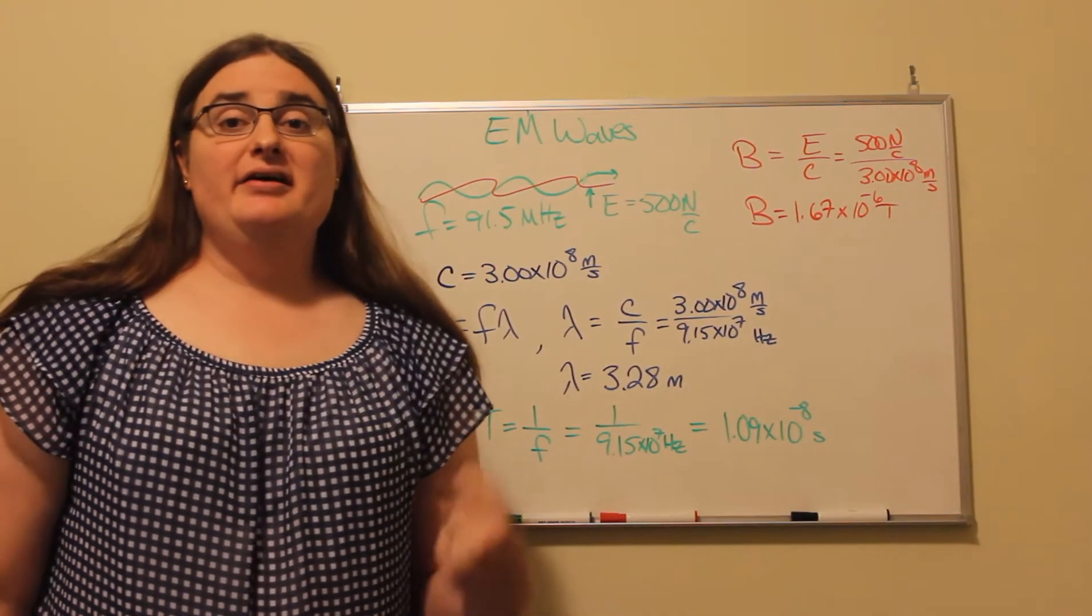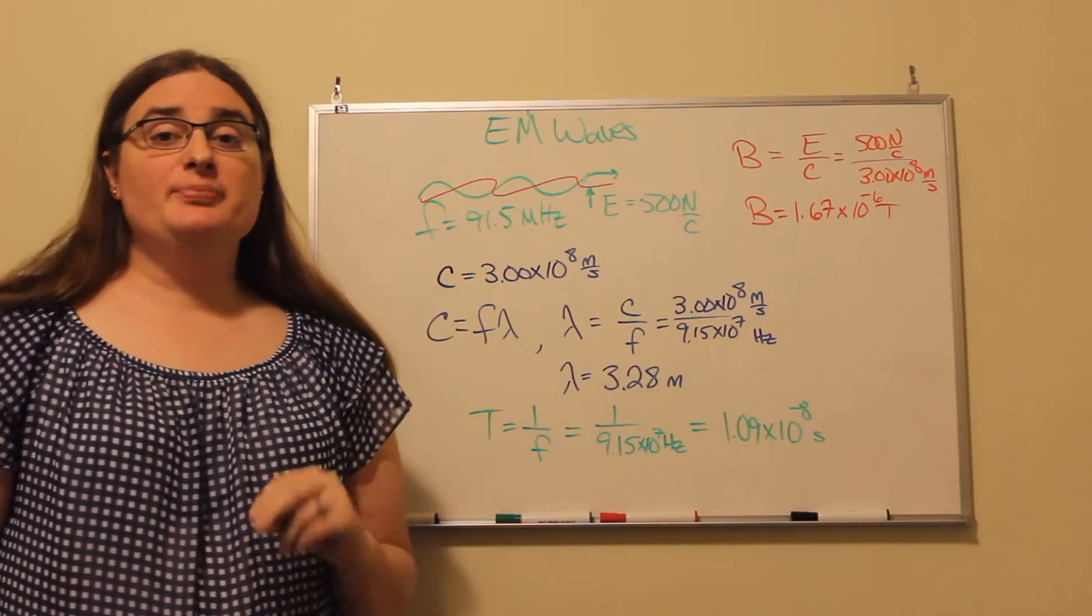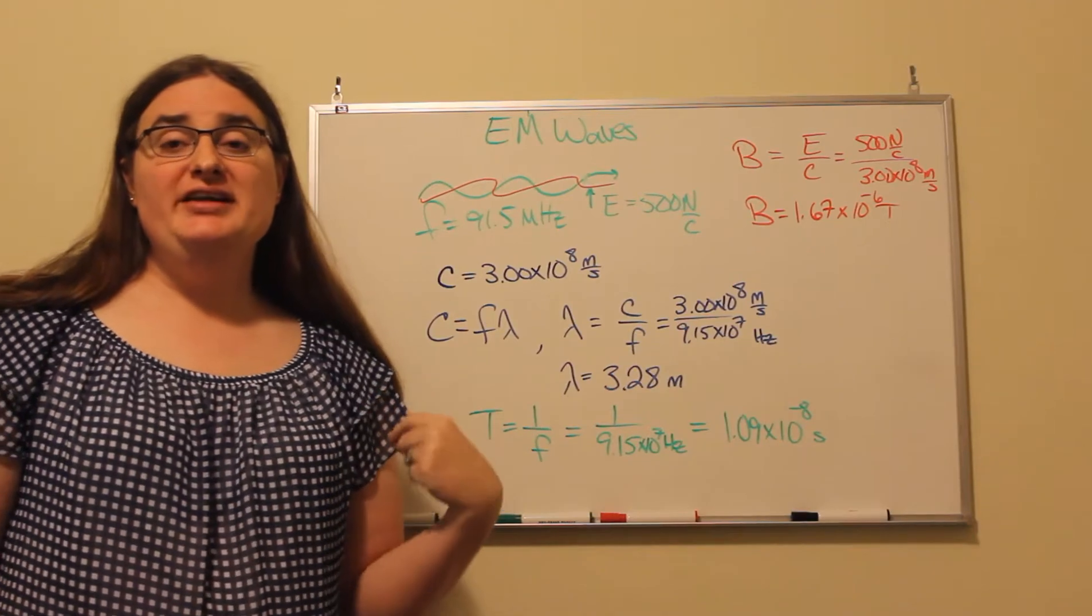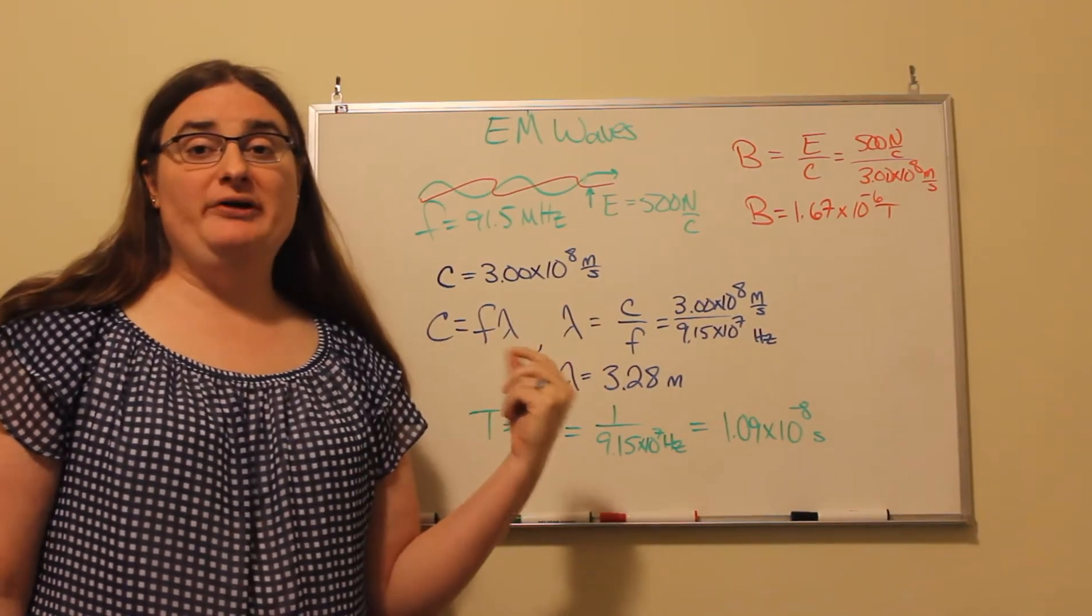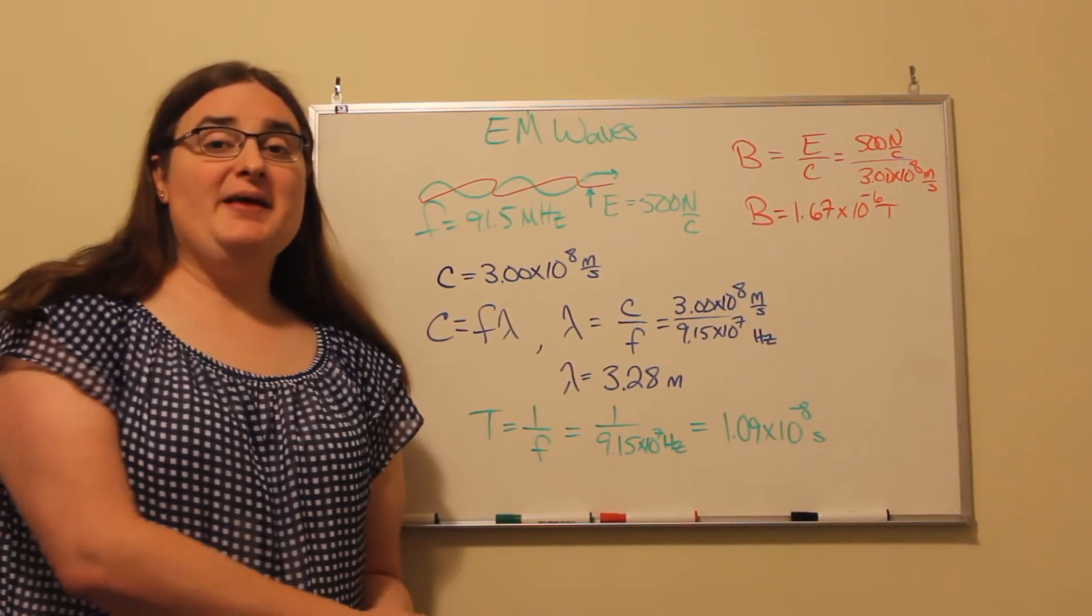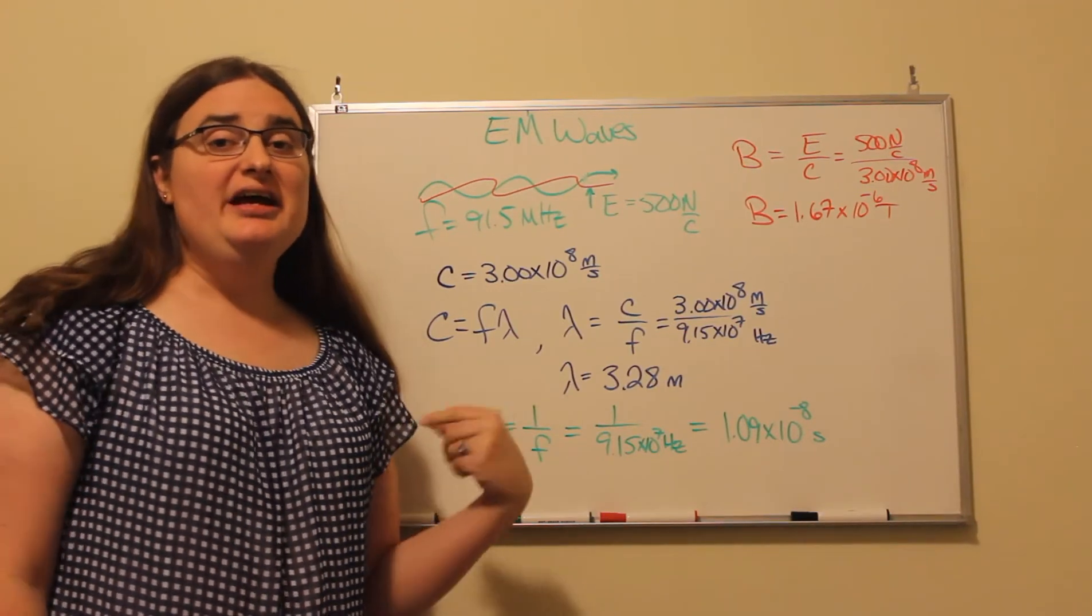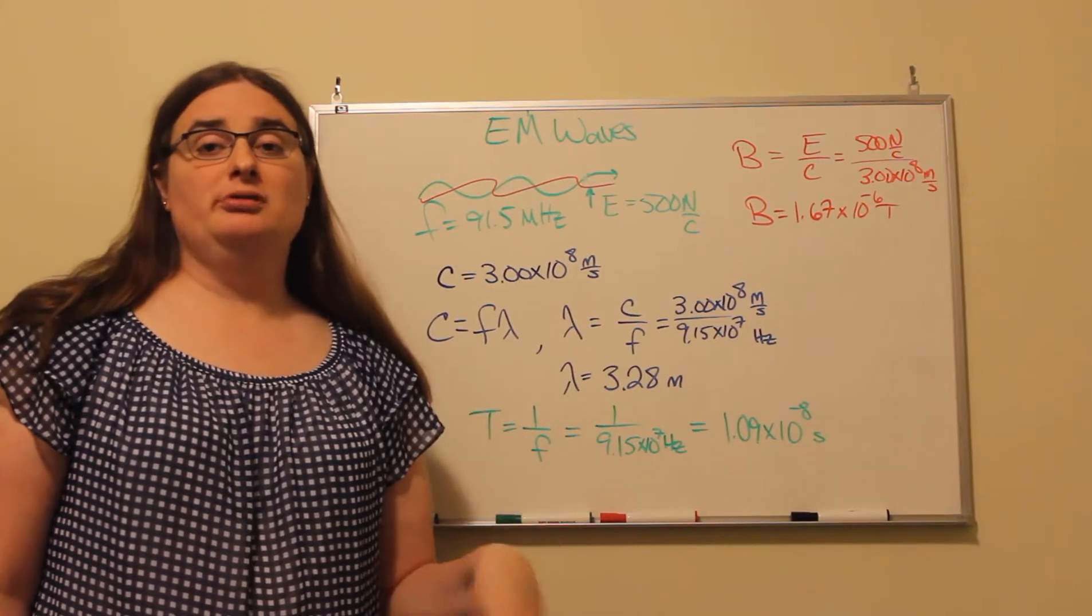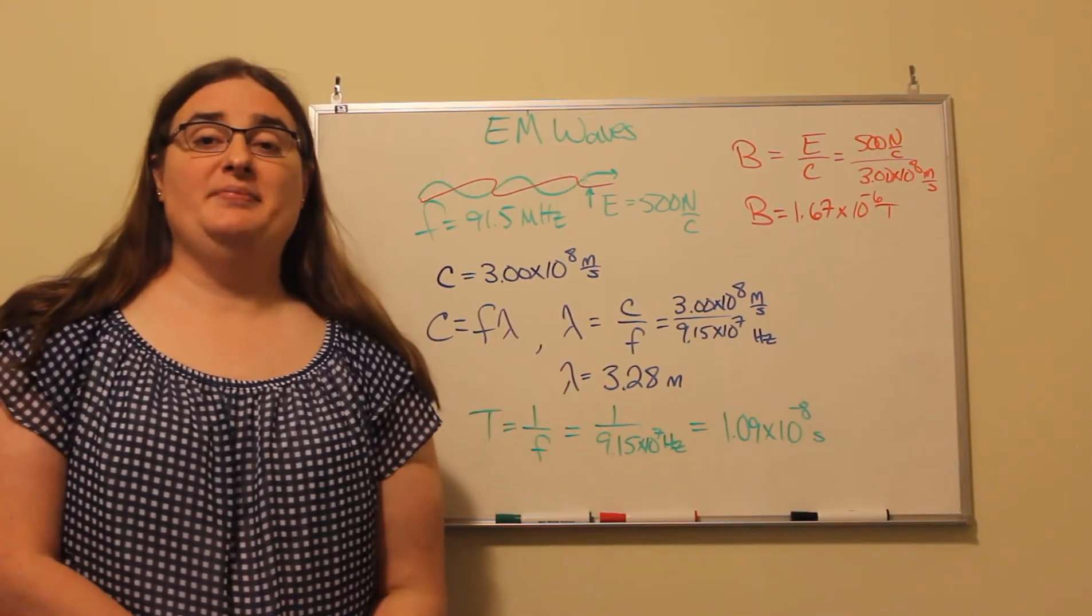Let's take a look at the property of some electromagnetic waves. Say a particular electromagnetic wave that we're looking at has a frequency of 91.5 megahertz, which would correspond to 91.5 on the FM dial, and we're at a point in space where the amplitude of that oscillation has a magnitude of 500 newtons per coulomb for the electric component of that electromagnetic wave.